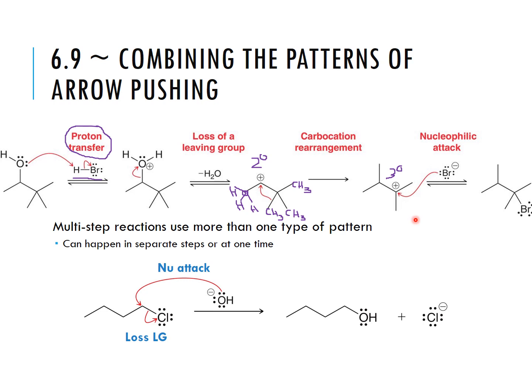This example uses all four mechanism types, which is why it's used as an example — it's not very common to have all four in the same reaction. Another point: in this example we're doing one mechanism type at a time, but down here a nucleophilic attack and loss of leaving group are occurring at the exact same time. We can have more than one mechanism step happening at once, or they can happen one at a time.